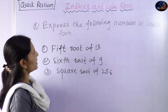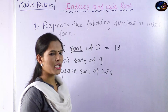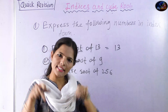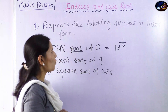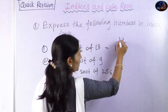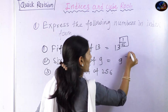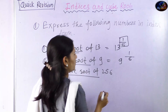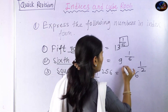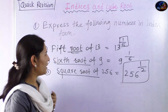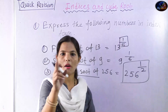Our next question: express the following numbers in the form of index notation. For example, the 5th root of 13 — here 13 is under the 5th root. The rule is that the root number goes to the denominator as the index, so it becomes 13 raised to 1 upon 5. Similarly, the square root of 256: square root means 2, so this becomes 256 raised to 1 upon 2. The root number always goes to the denominator of the fractional index.